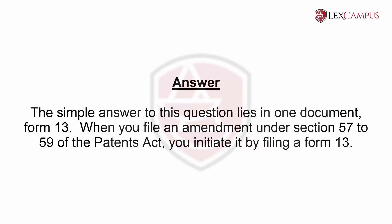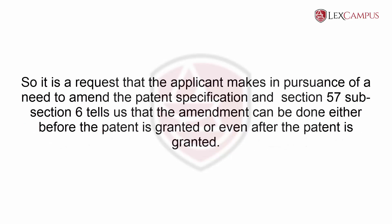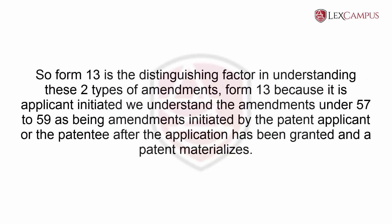Answer: The simple answer to this question lies in one document — Form 13. When you file an amendment under Sections 57 to 59 of the Patents Act, it is initiated by filing a Form 13. This is a request that the applicant makes in pursuance of a need to amend the patent specification. Section 57, subsection 6, tells us that the amendment can be done either before the patent is granted or even after the patent is granted. So Form 13 is the distinguishing factor in understanding these two types of amendments.